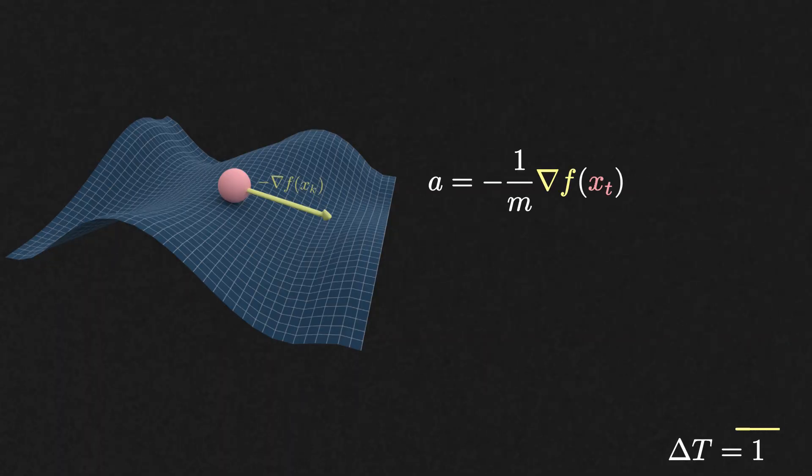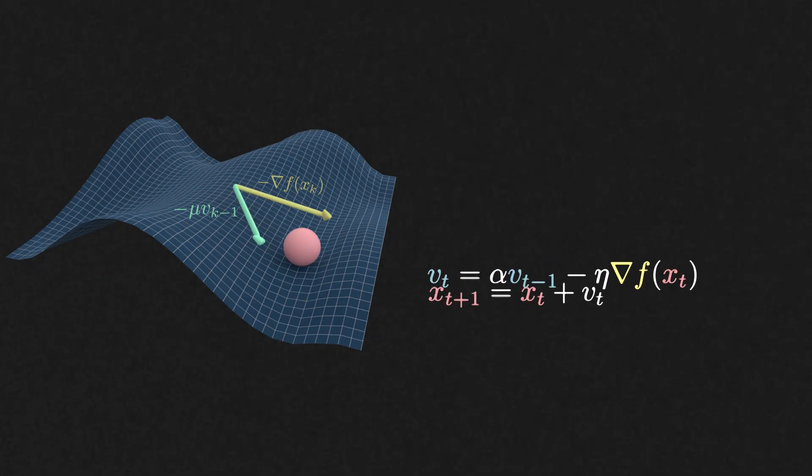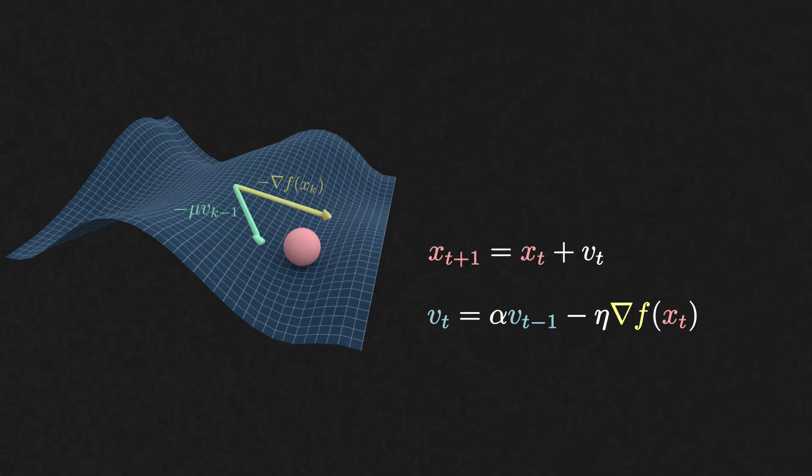Integrating over a small unit of time gives us the velocity of the particle, to which we add a friction term minus mu times v t minus one. Integrating a second time gives us the position of the particle. And after a trivial reparameterization, we recover momentum gradient descent.